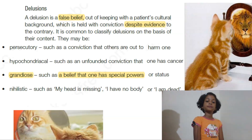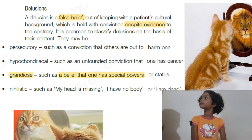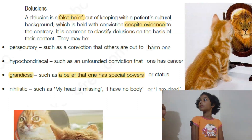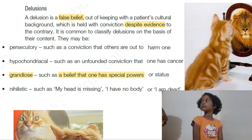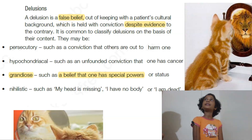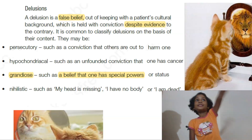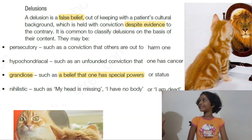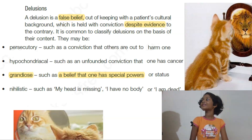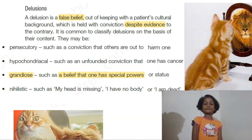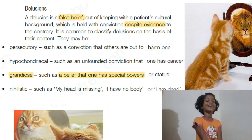Grandiose. Grandiose means he believes he is very rich, or he has some power — like he thinks he can fly. You show him he can't fly, he still thinks he can fly. Maybe he thinks he can climb on the wall. So that is grandiose delusion.